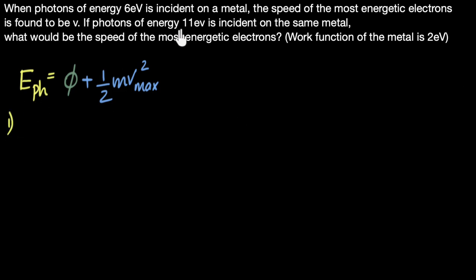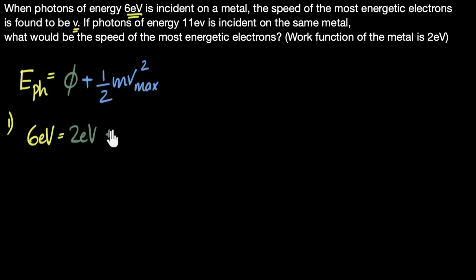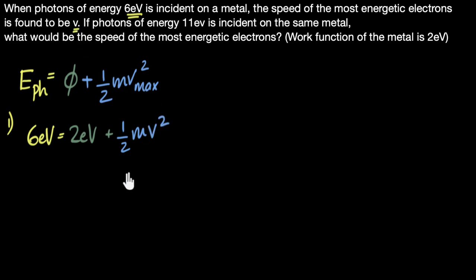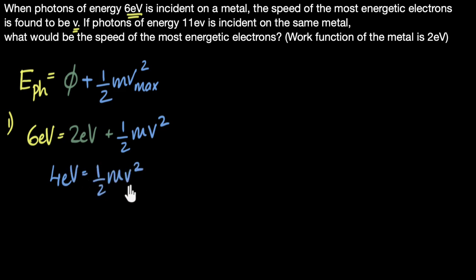In the first case, for 6 electron volts, I get the speed to be V. So: 6 electron volts equals the work function, which is 2 electron volts, plus half M times V squared. Simplifying: 4 electron volts equals half MV squared. I'll keep it in this form.